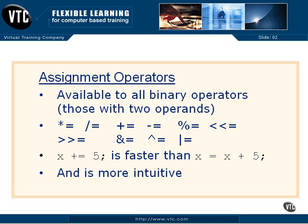The assignment operators are available to all binary operators. Remember, a binary operator is one that has two operands — one on either side of the operator, on the left and the right. The result of the operation is put to the left side of the equal sign into a result variable. A unary operator, as we remember, is one that only has a single operand.